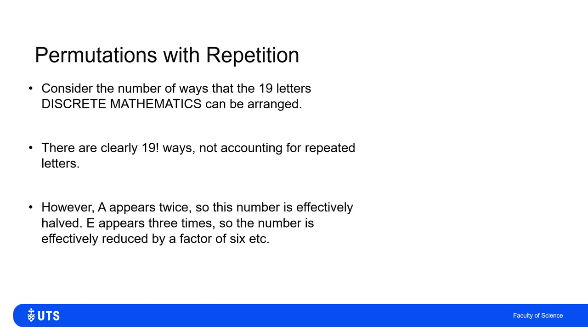If I work out how many times—there's two A's in discrete mathematics, then I've got that. I've also got E appearing three times. I've got three E's. So the effect of two A's is that if I said 19 factorial, that count would be twice as big as it should be. The effect of treating that when I've got three E's is the fact it's sixfold increase, because I'd have three factorial.